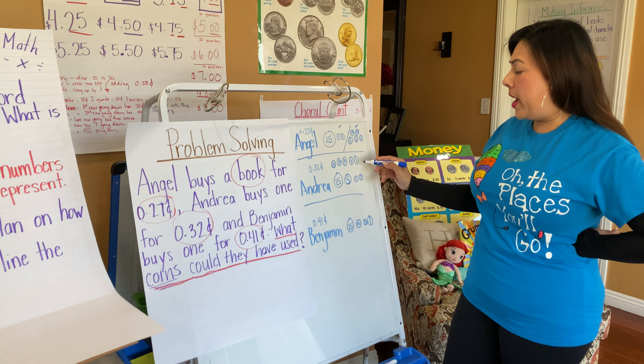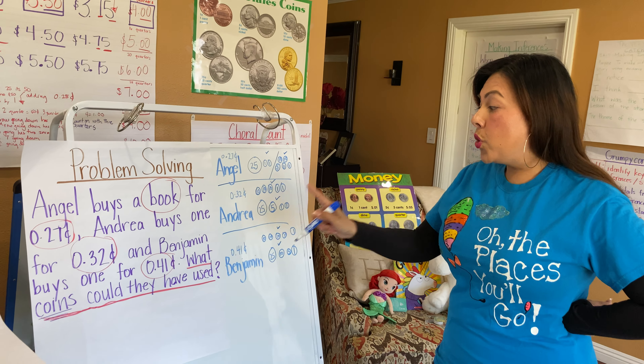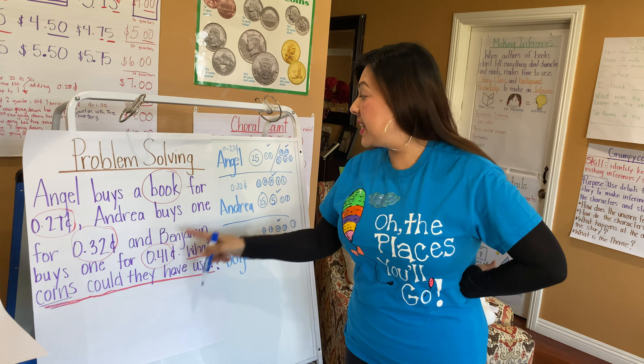For Andrea's second way — 32 cents — I'll use three dimes: 10, 20, 30, and two pennies: 31, 32. So three dimes and two pennies also makes 32 cents. For Benjamin's second way — 41 cents — I'll use four dimes: 10, 20, 30, 40, and one penny: 41. So four dimes and one penny makes 41 cents.